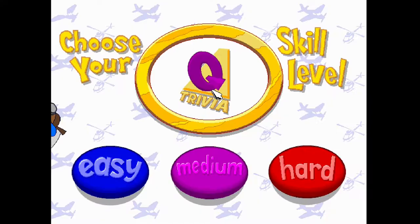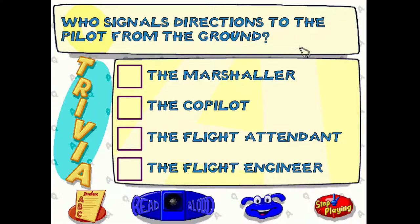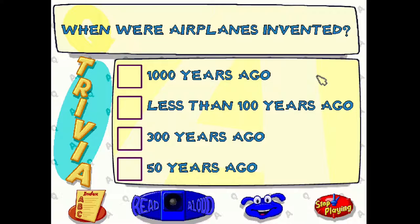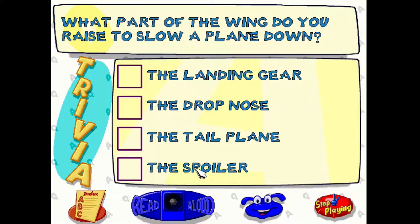Let's try hard trivia. 'Who signals directions to the pilots from the ground?' — probably this guy. 'When were airplanes invented?' I remember the Microsoft Flight Simulator in 2000-something was considered a hundred years of flight, and this game came out in '95-'96, so definitely less than 100 years ago. 'What part of the wing do you raise to slow a plane down?' If you hover over it'll read for you. I thought it was the flaps but they call it the spoiler — yeah, there we go.